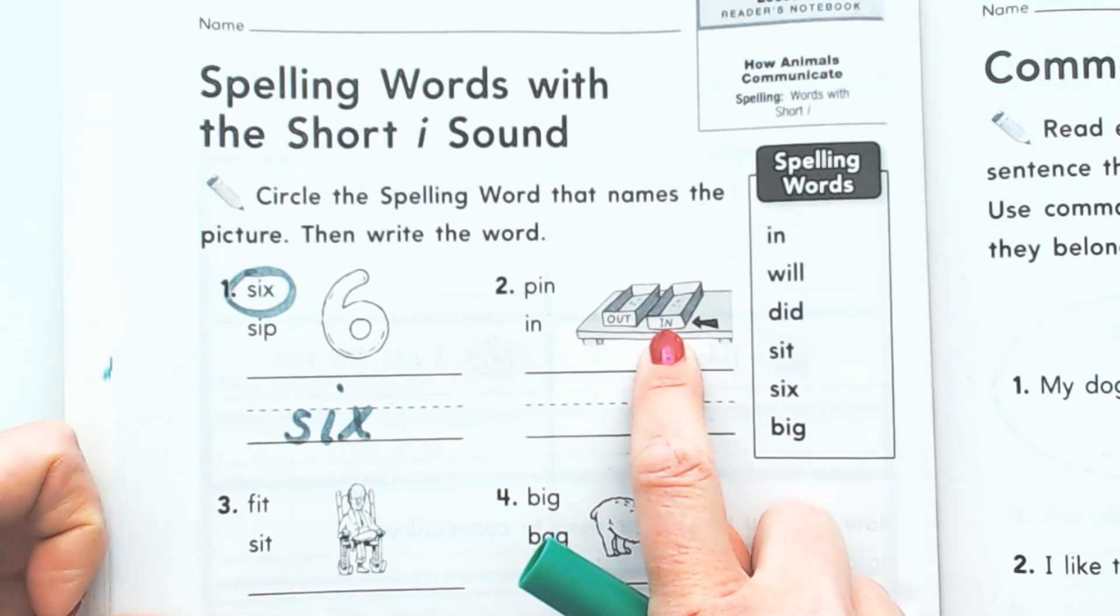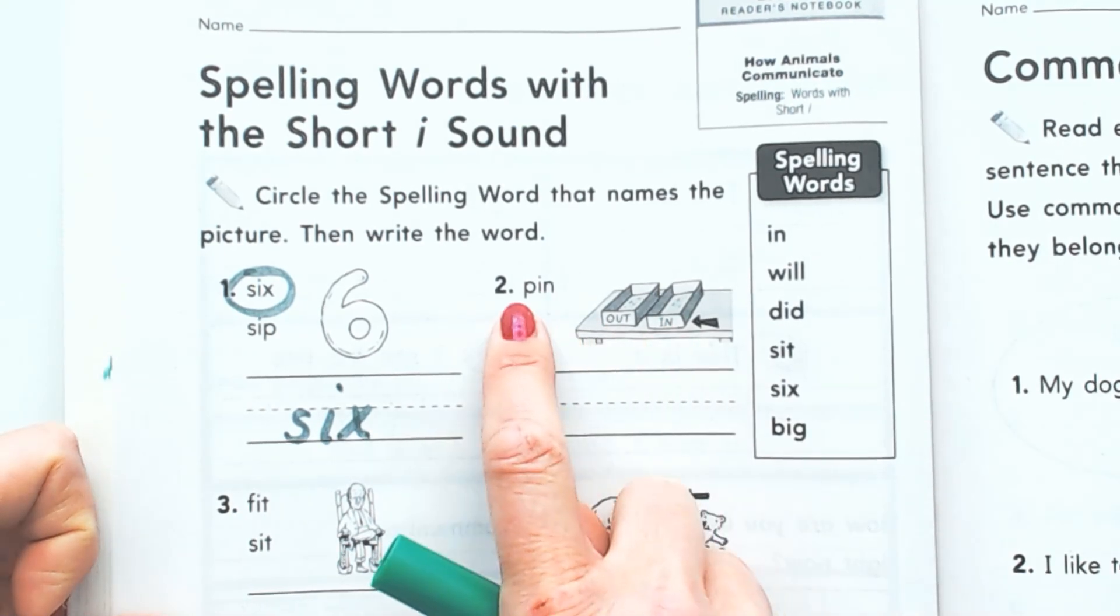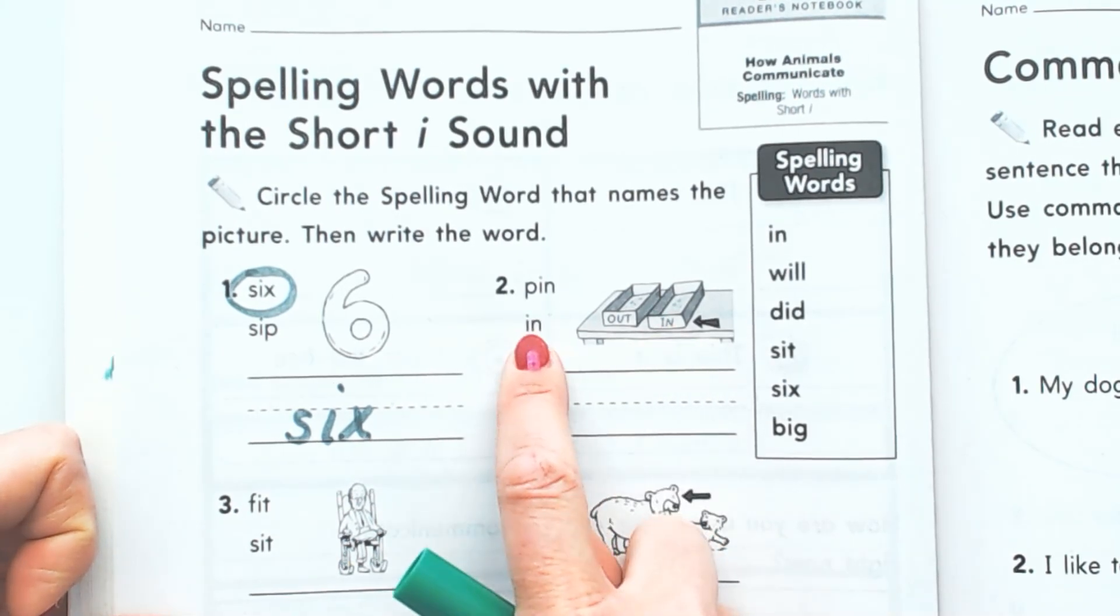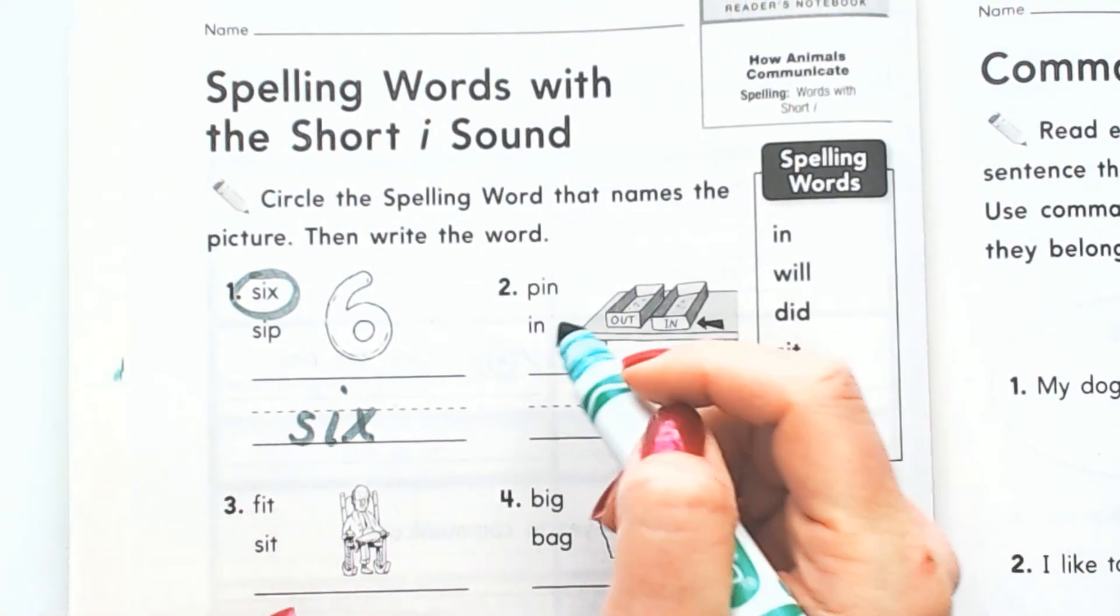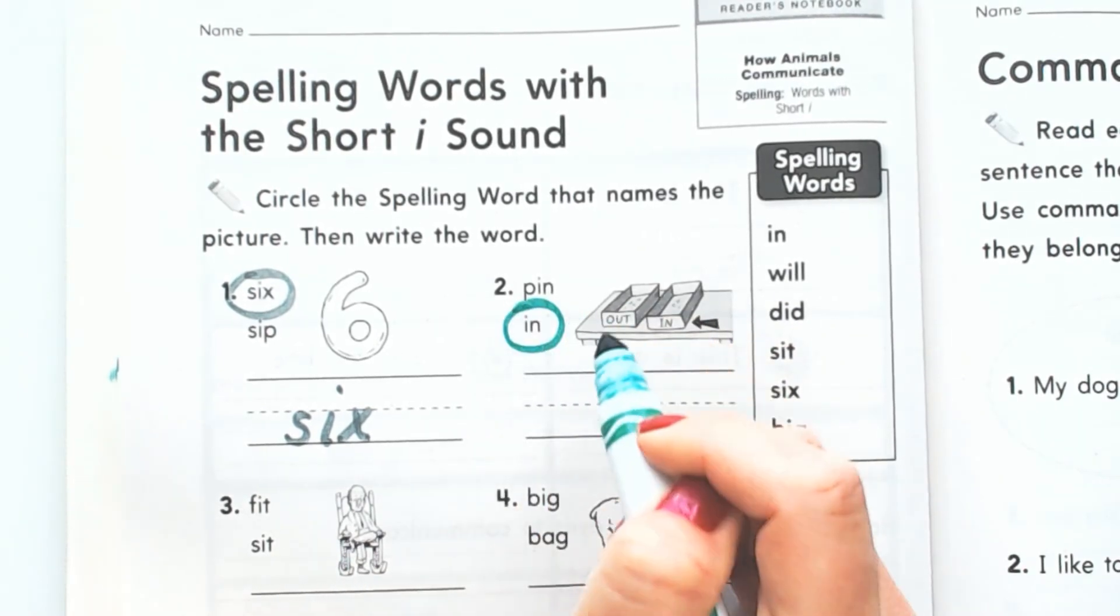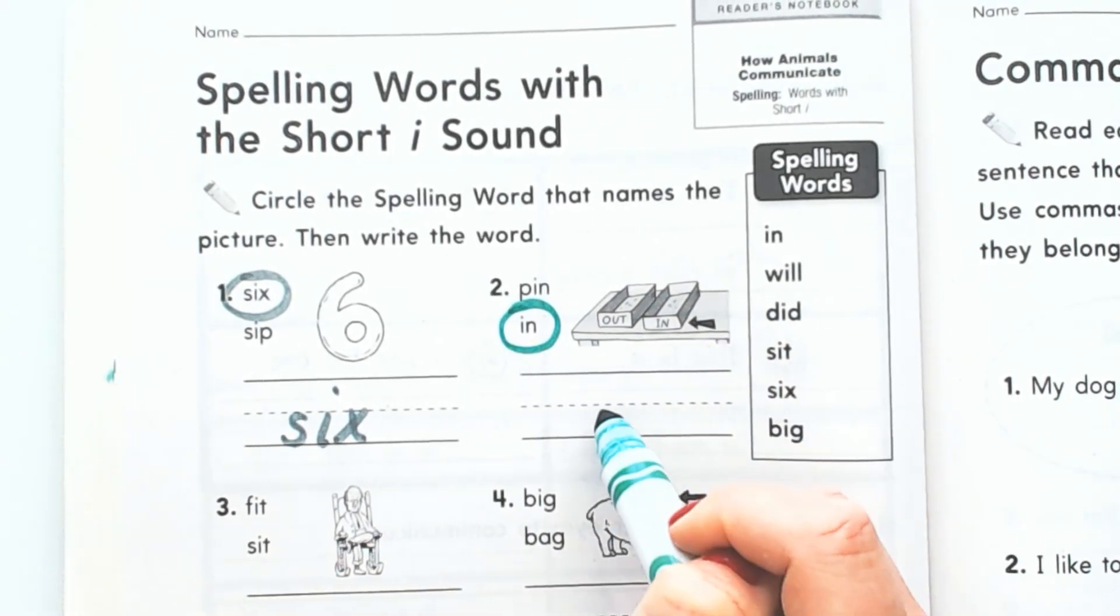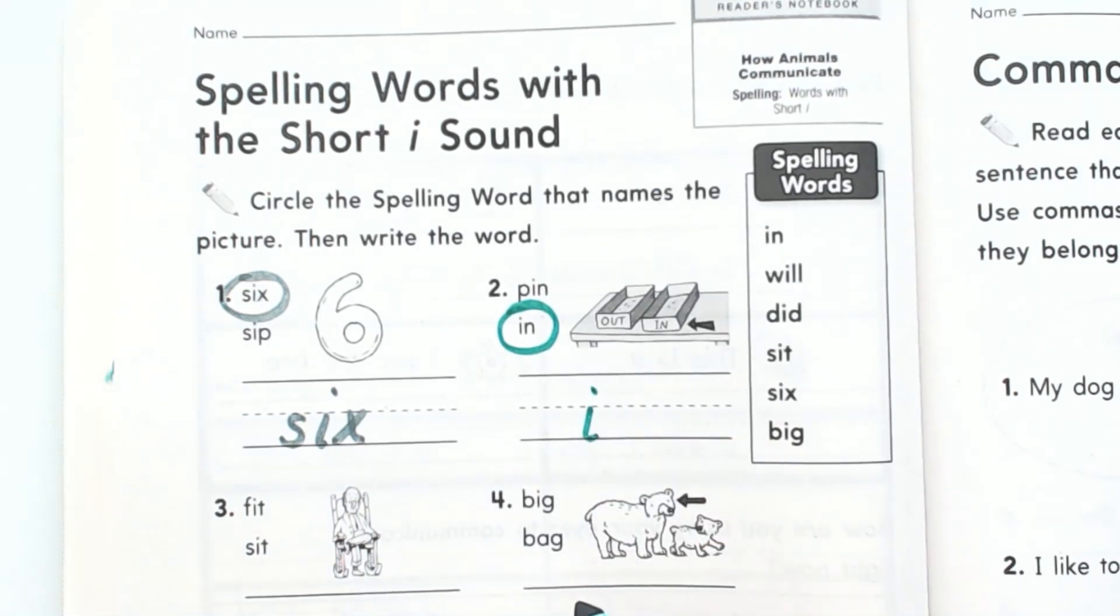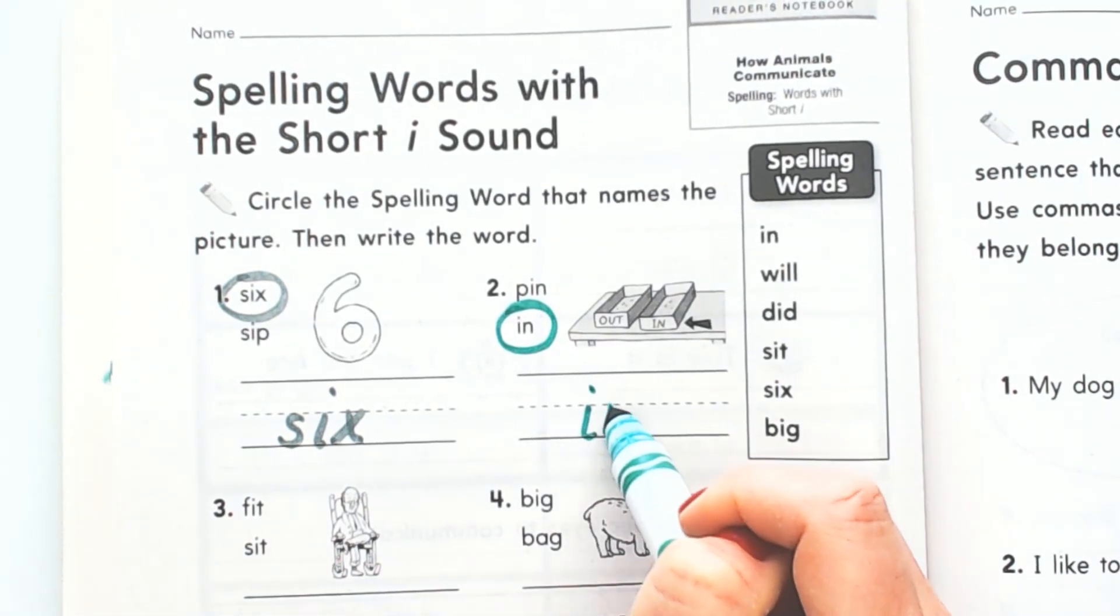This is pointing to this box that says 'in.' That is so easy, boys and girls. Which of these words says 'in' and is showing you how to spell 'in,' right? The one that has I-N. Well, that could not be easier. Let's circle the word 'in' and spell it like we're going to spell it on our spelling test.